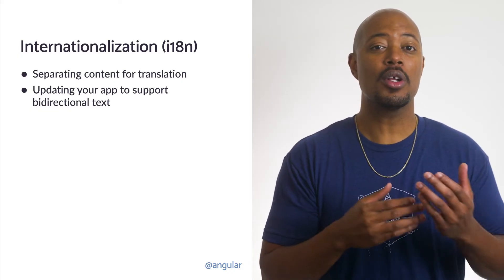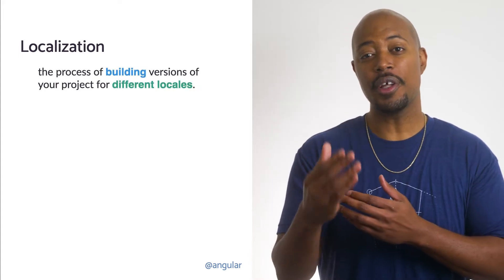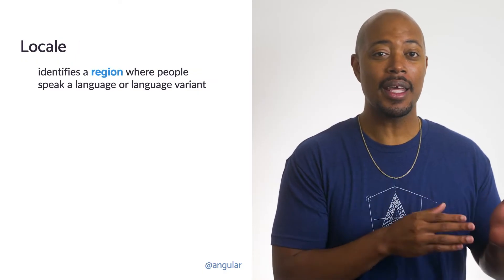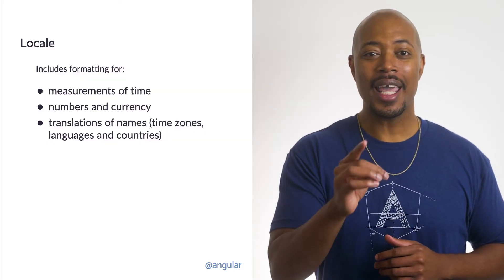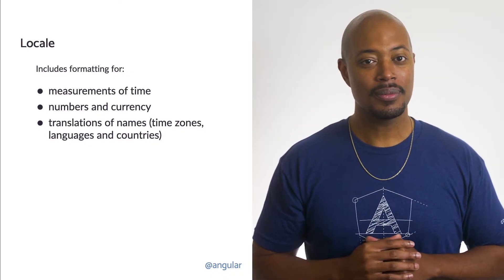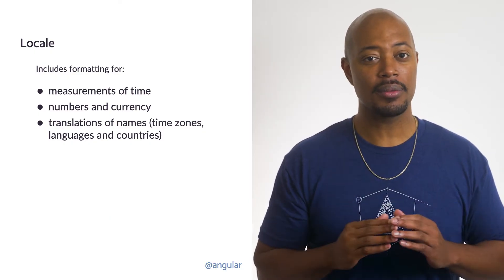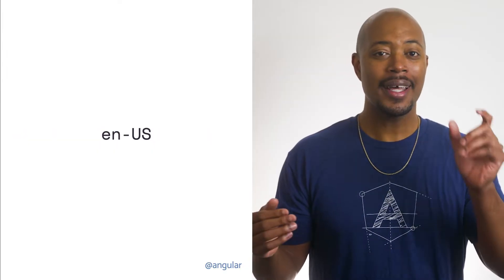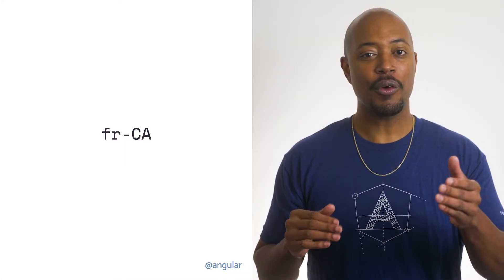Once you prepare your app, the next step is to localize the application. Localization is the process of building versions of your project for your different locales. A locale identifies a region where people speak a language or language variant. For a given locale, there is specific formatting for measurements of time, numbers, and currency. There's also translations of names, including time zones, languages, and countries. Check out the description for more resources. Locales take the format of language ID hyphen locale extension — for example, EN-US for English in the United States or FR-CA for French in Canada.